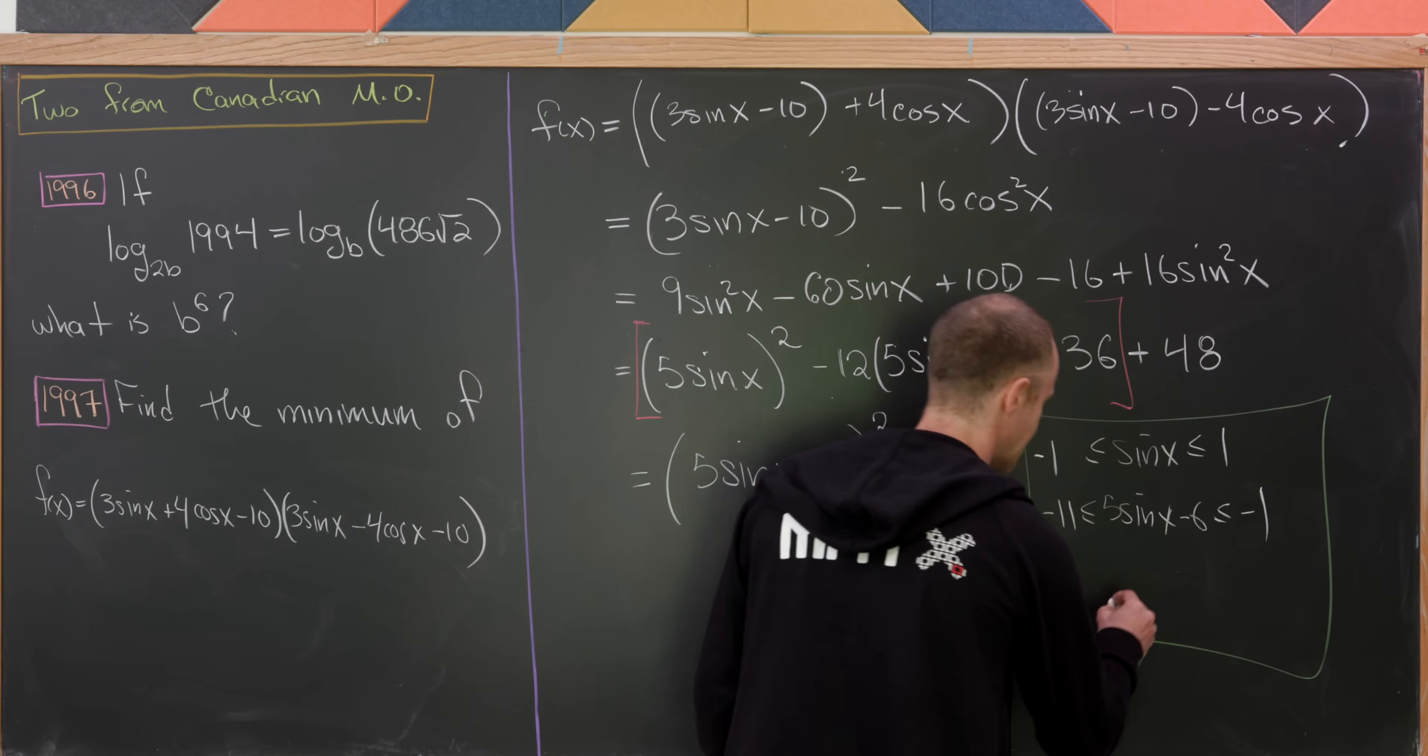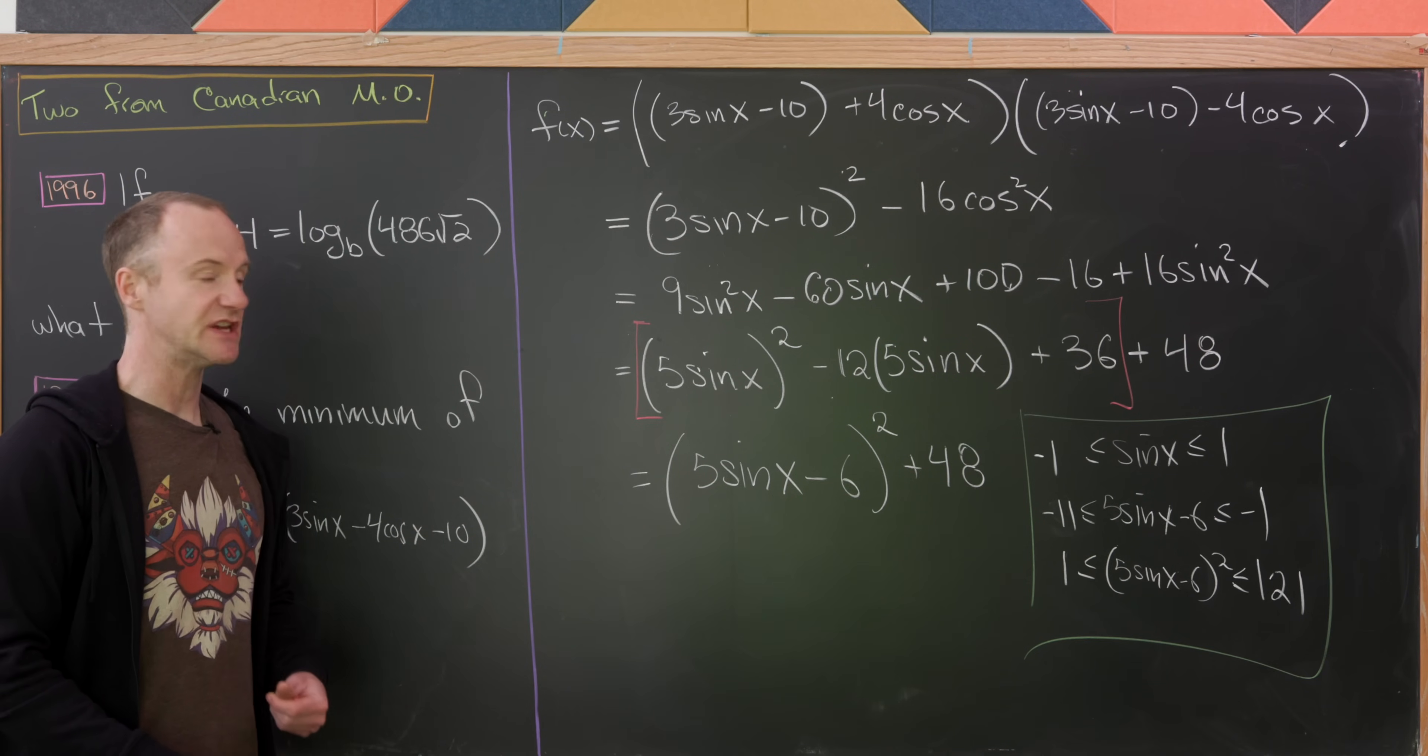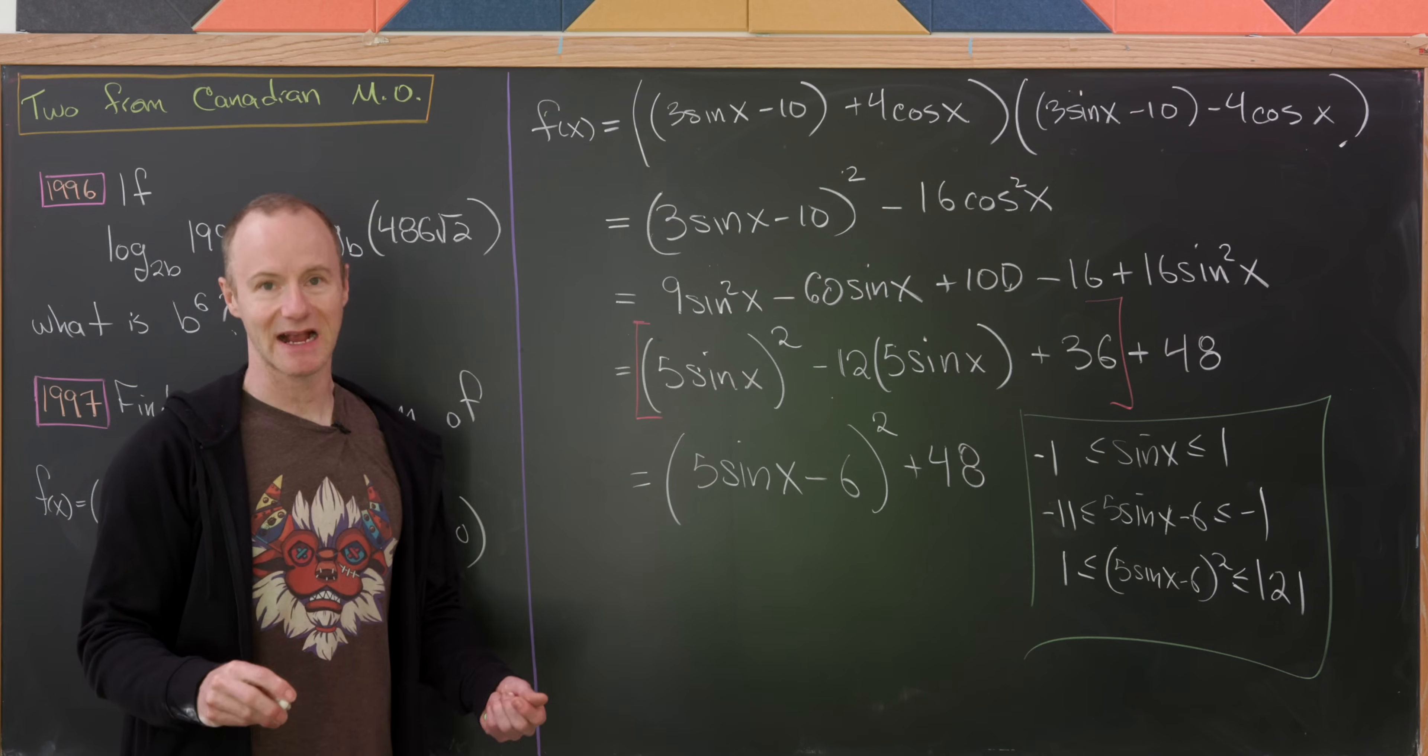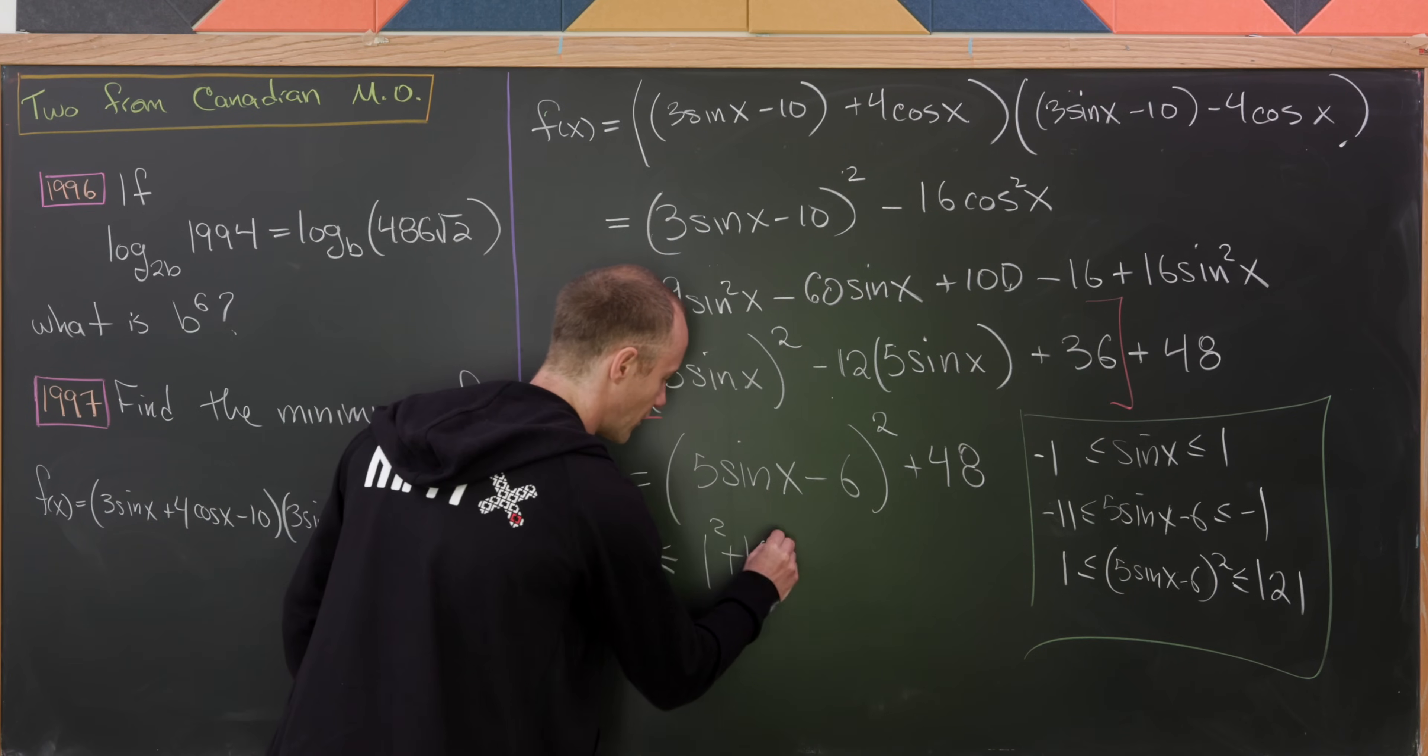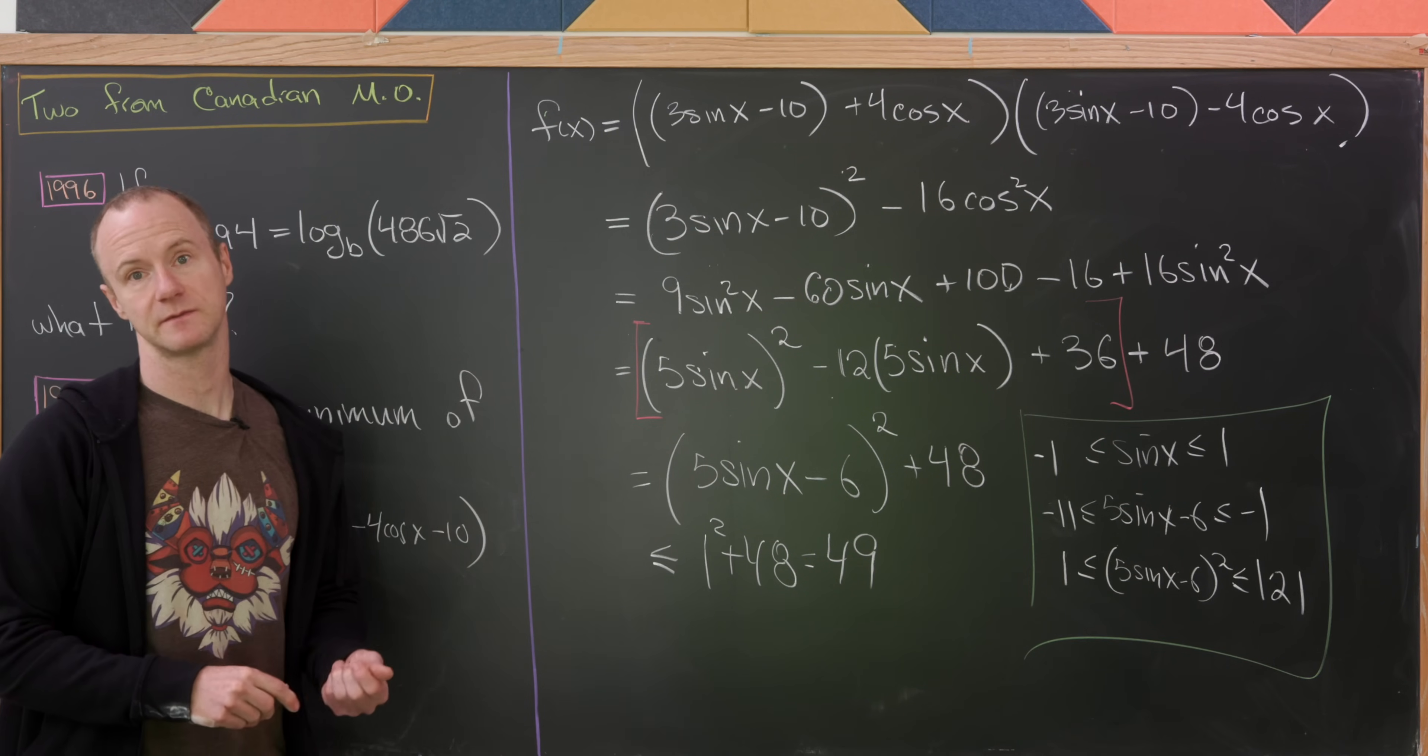But then squaring that, we'll have 5 sine x minus 6 quantity squared is always bigger than or equal to one and less than or equal to 121. And then does it achieve any of those? Well, yes, it in fact does achieve those because it's going to achieve this value of one when sine of x is equal to one, for example, at x equals pi over two. So since it achieves that minimum, this all is going to be less than or equal to one squared plus 48 equals 49. And then if you want to know where this occurs, it occurs when x is equal to pi over two, as we discussed before. So there we have it. We found the minimum of our function, and that's a good place to stop.